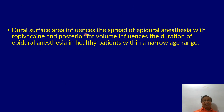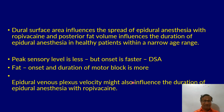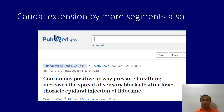The dural surface area influences the spread of epidural anesthesia with ropivacaine, and the posterior fat volume influences the duration of epidural anesthesia in healthy patients. A greater dural surface area means the peak sensory level may be less but onset is faster. The epidural venous plexus velocity may also influence spread. The epidural space lies between the inner cord and the outer dura mater, with the subarachnoid space inside and cord extensions visible.